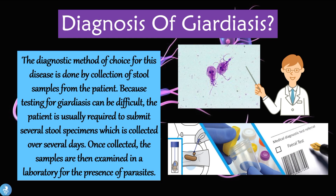The diagnostic method of choice for giardiasis is the collection of stool samples from the patient. Because testing for Giardia can be difficult, the patient is usually required to submit several stool specimens collected over several days — the more samples, the better the chances of finding the parasite. Once collected, the samples are examined in a laboratory microscopically for the presence of trophozoites or cysts in the patient's stool.